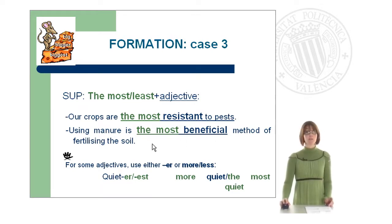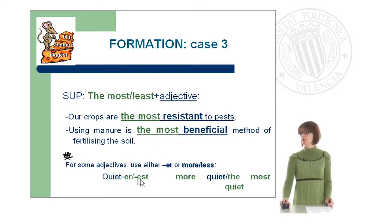Be careful, because for some adjectives we can use both -er or 'more/less'. For example: quiet — quieter, quietest, or alternatively, more quiet, the most quiet.